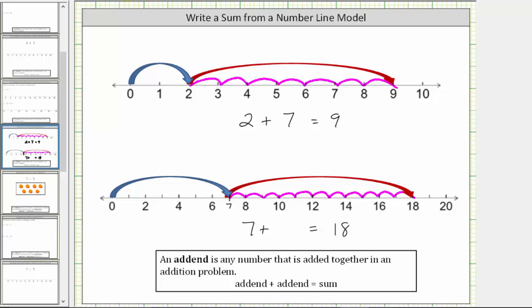This means eleven is the second addend, giving us the addition problem seven plus eleven equals eighteen. This model also shows seven increased by eleven is eighteen. I hope you found this helpful.